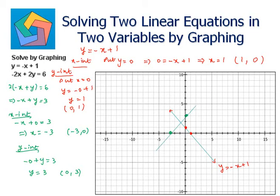This is the graph of the line negative 2x plus 2y is equal to 6. Now check the intersection point — both lines are intersecting at the point (−1, 2). So the solution will be x is equal to negative 1 and y is equal to 2 for these two linear equations.